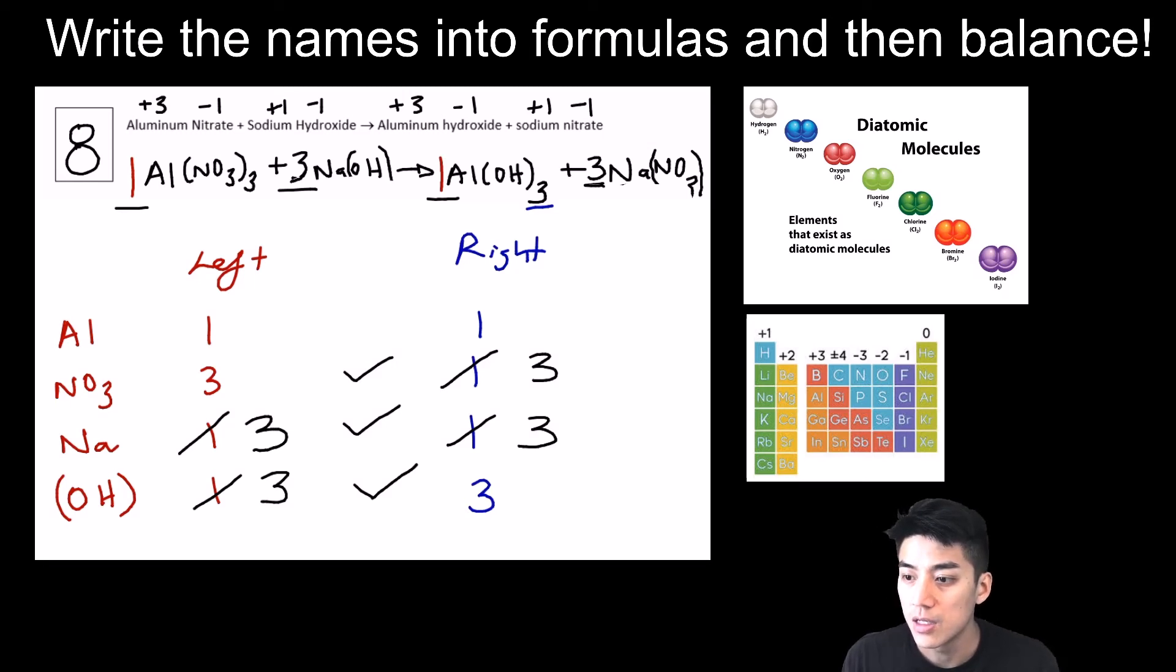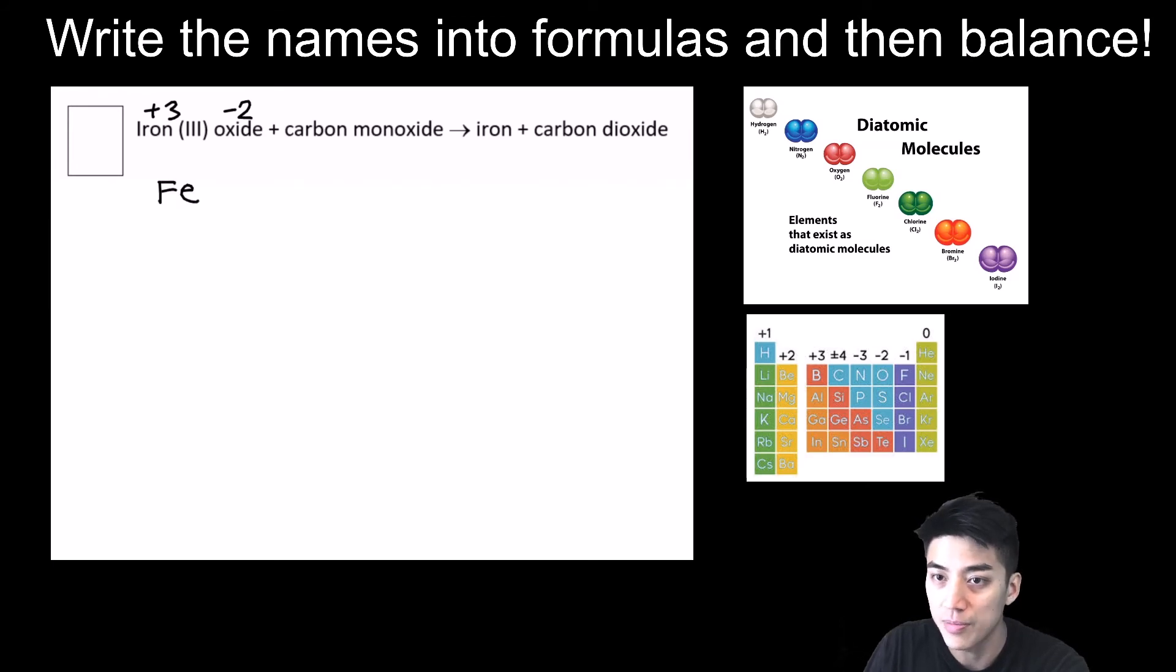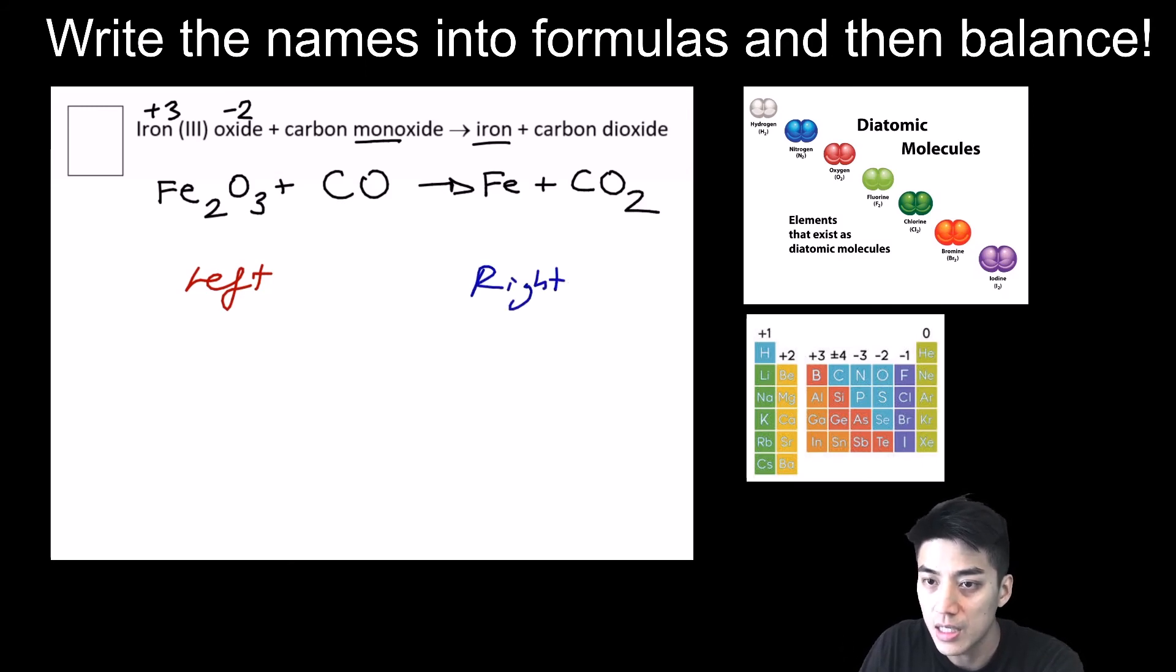The actual mechanics of balancing the equations are no different from part one. This one involves a D-block metal because you see the Roman numerals and iron is a D-block metal. Write out the charges and then crisscross them. We've got Fe2O3 plus carbon monoxide, which is just CO. No need to crisscross the charges because it's covalent. Iron is just Fe, and carbon dioxide everyone knows is CO2. On the left and on the right, let's count them up. Let's see how many irons, oxygens, and carbons we've got.